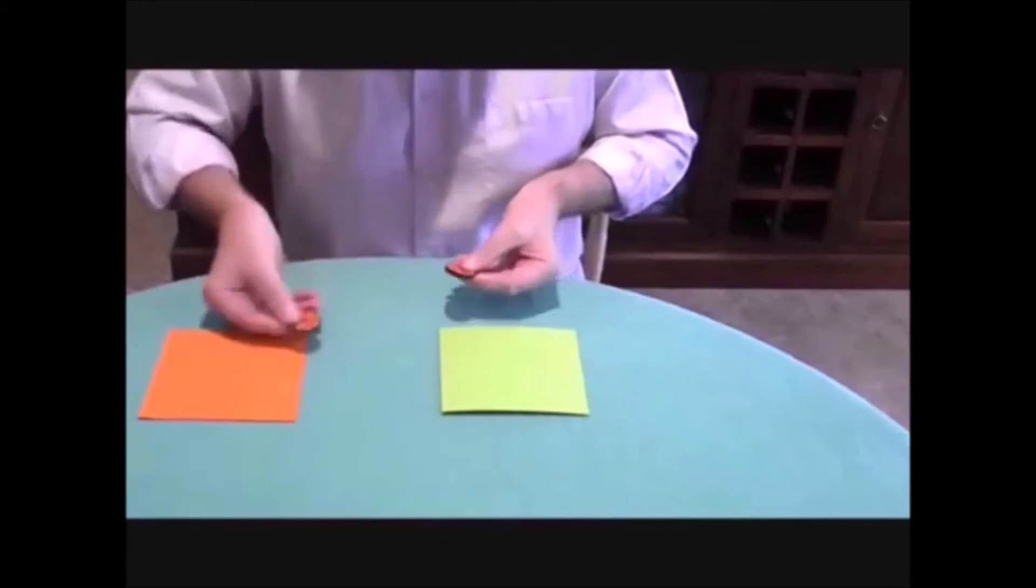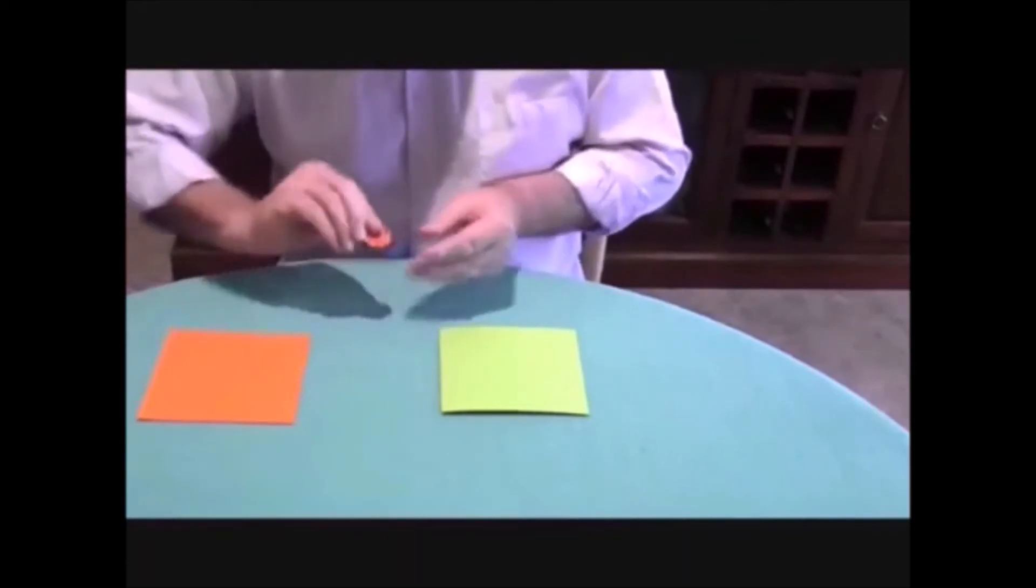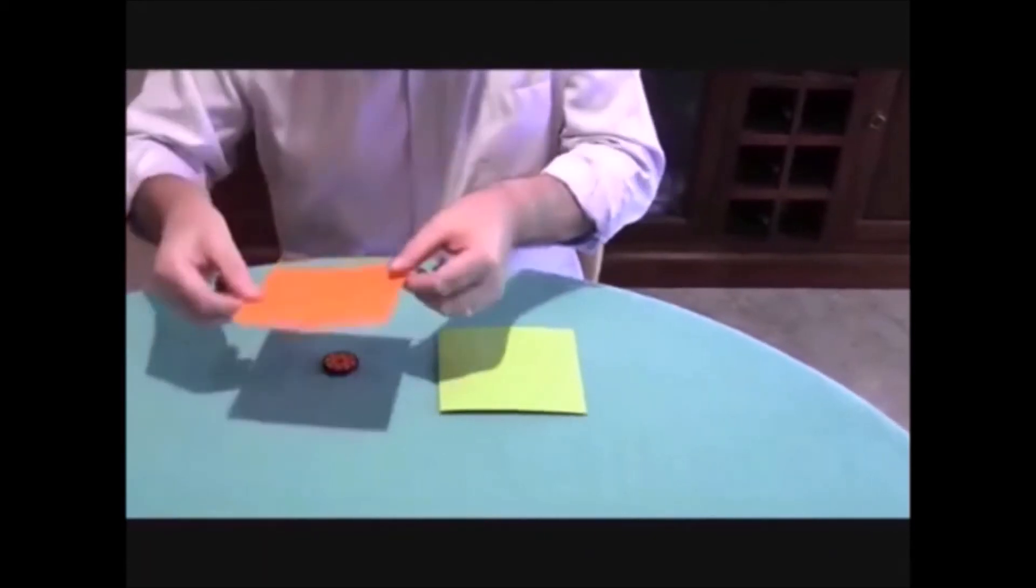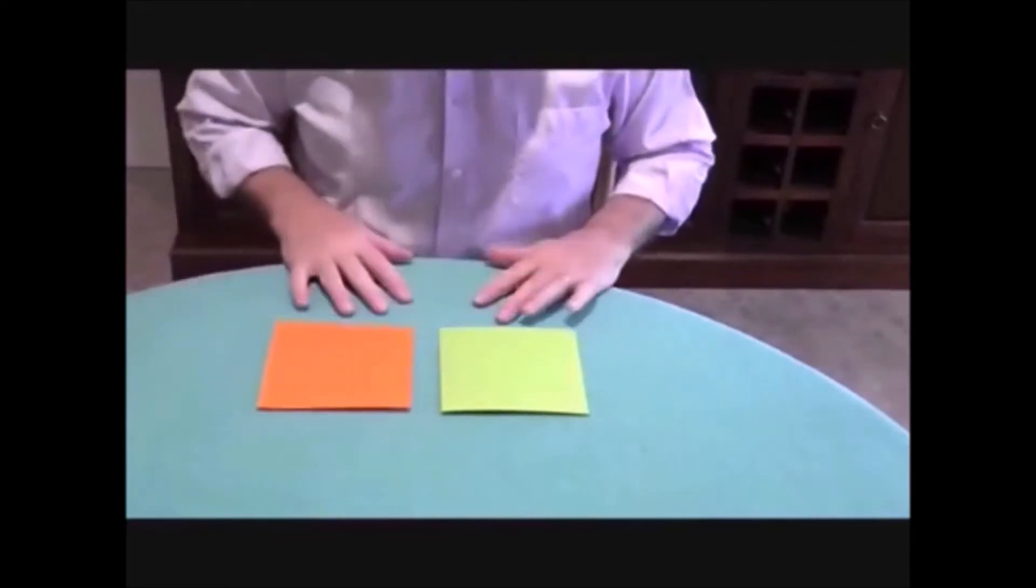Simple. We take the orange ones. There's one orange, two orange poker chips and we'll put the orange sheet over the orange poker chips.